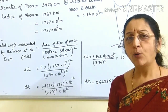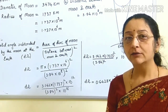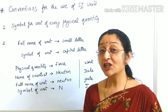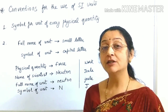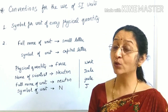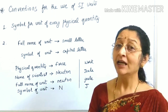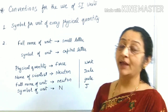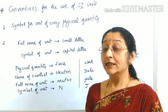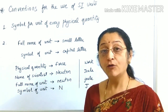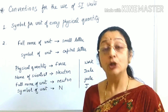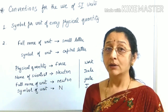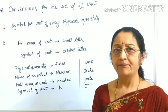The answer is dΩ = 6.428 × 10⁻⁵ steradians, which is the solid angle subtended by the moon at any point on the earth. In the 14th International Conference on Weights and Measures, it was decided that the SI system — the International System of Units — should be used for measurements.